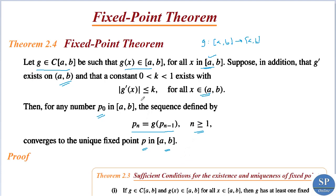To summarize the fixed point theorem: g belongs to C[a,b] and g is a function from [a,b] to [a,b]. In addition, g' exists on (a,b) and a constant k exists such that 0 < k < 1 and |g'(x)| ≤ k for all x in (a,b). Then for any p₀ in [a,b], the sequence p_n = g(p_{n-1}) converges to the unique fixed point p in [a,b].